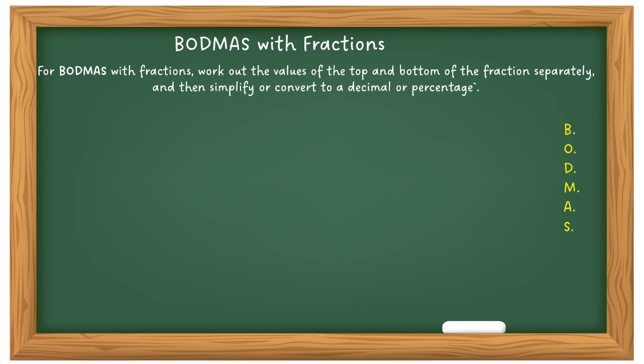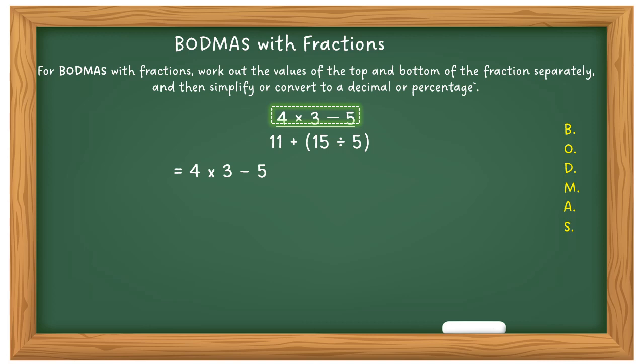Now let's look at BODMAS with fractions. For BODMAS with fractions, work out the value of the top and the bottom of the fraction separately, then simplify or convert to a decimal or a percentage — it really depends on what the question is asking. That may look fairly complex, but if you break it down you separate out the top part first and simply follow the BODMAS rules.